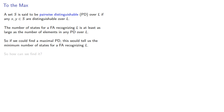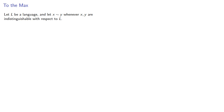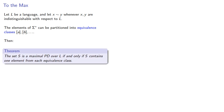So how can we find it? Let L be a language and let X squiggle Y whenever X and Y are indistinguishable with respect to L. The elements of our set of strings can be partitioned into equivalence classes. Then the set S is a maximal pairwise distinguishable set over L if and only if S contains one element from each equivalence class.